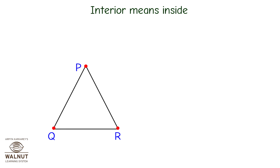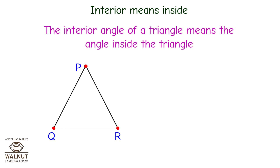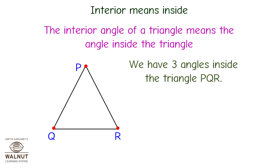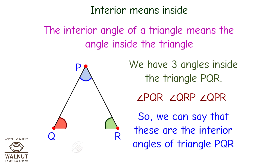Interior means inside. The interior angle of a triangle means the angle inside the triangle. We have three angles of triangle PQR: angle PQR, angle QRP, and angle QPR. So we can say that these are the interior angles of triangle PQR.